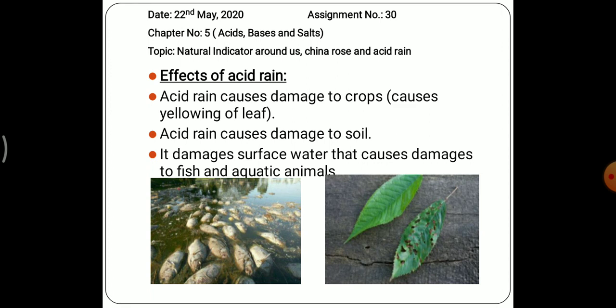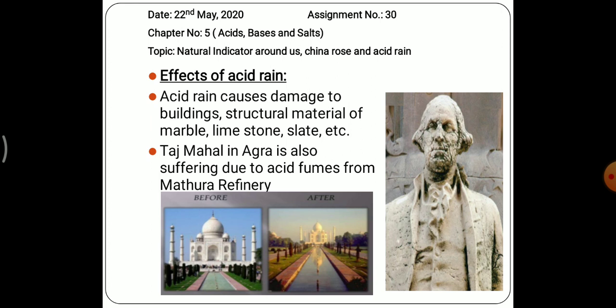If acid rain falls on the ground, several effects can be observed. First, acid rain causes damage to crops — the crops become yellowish in color. Second, acid rain damages the soil, making it acidic in nature; to remove this acidity we can add some bases to neutralize it. Third, as you can see in the picture, it damages aquatic life and surface water, causing damage to fish and aquatic animals, sometimes causing them to die.